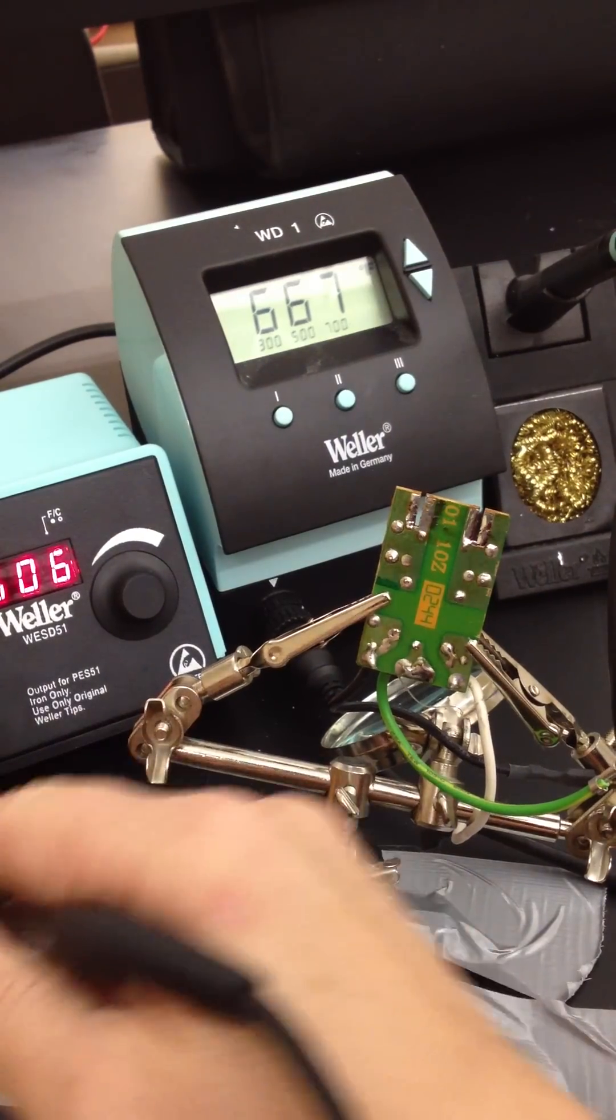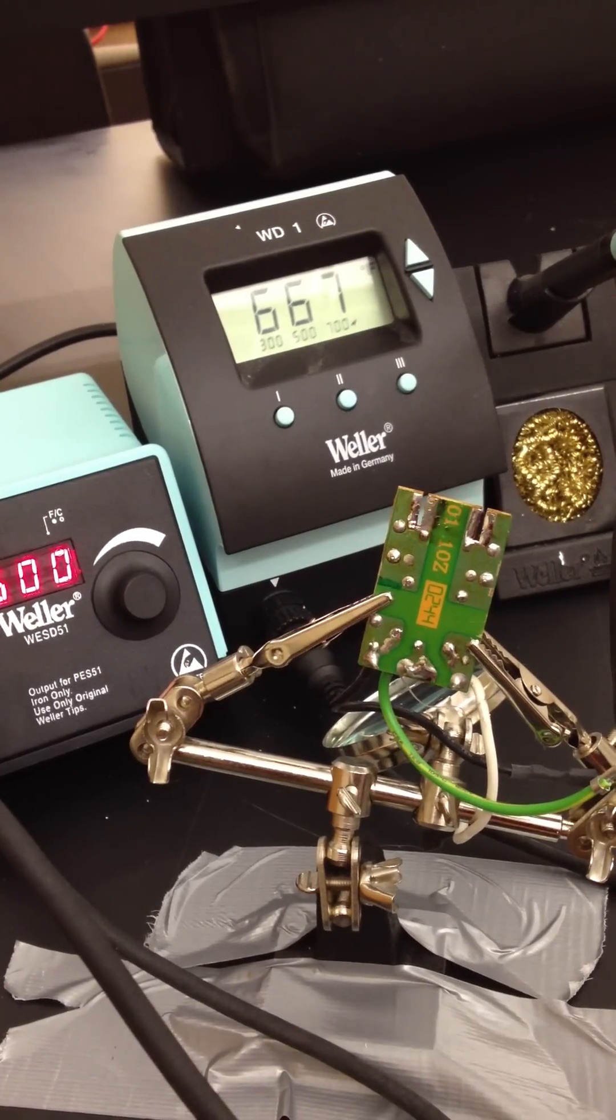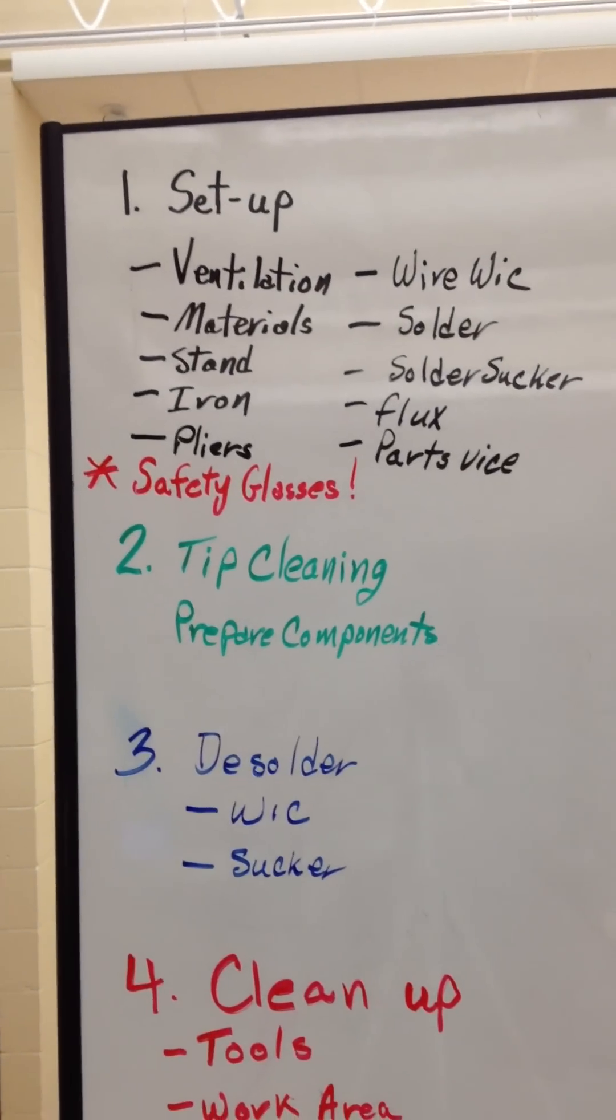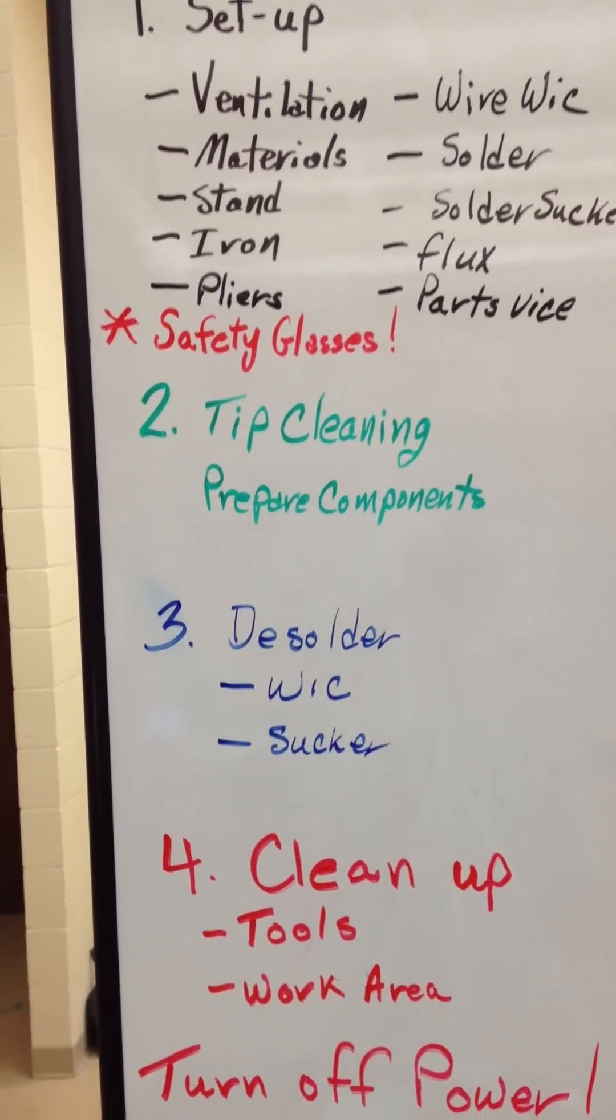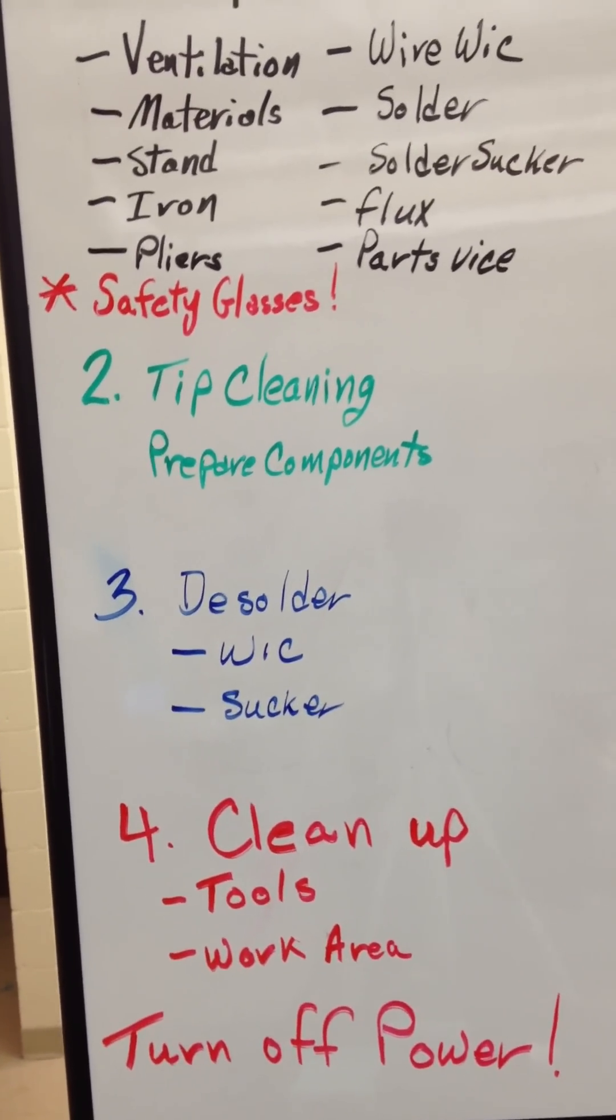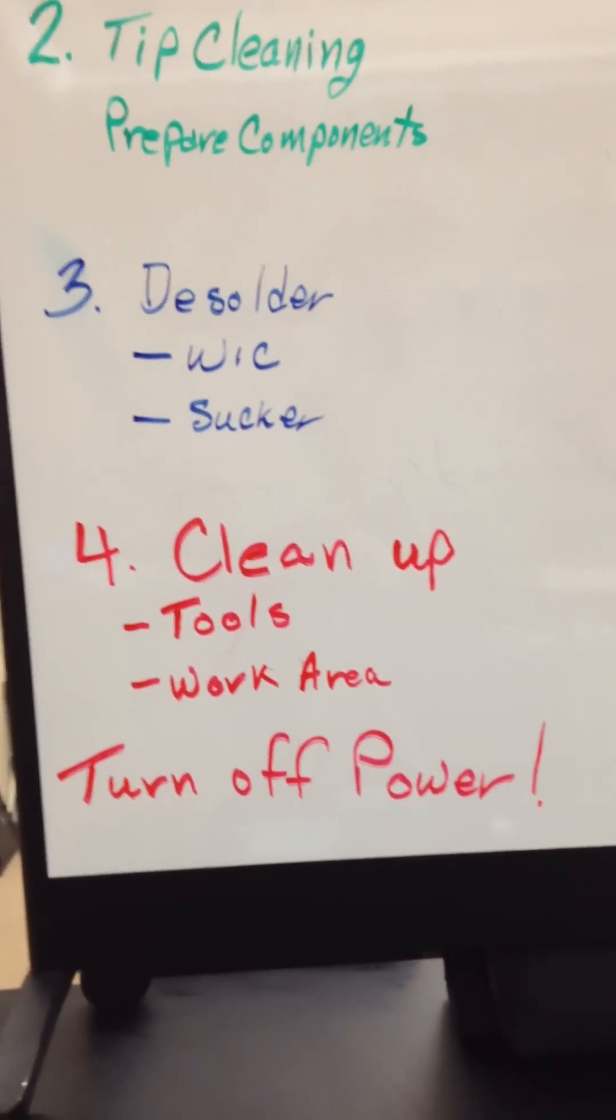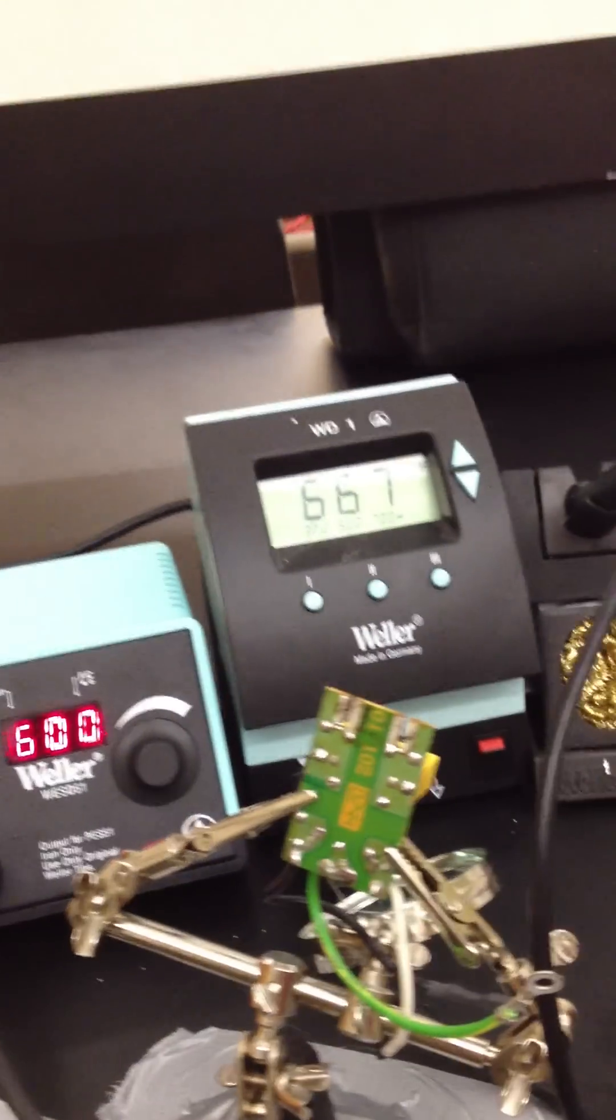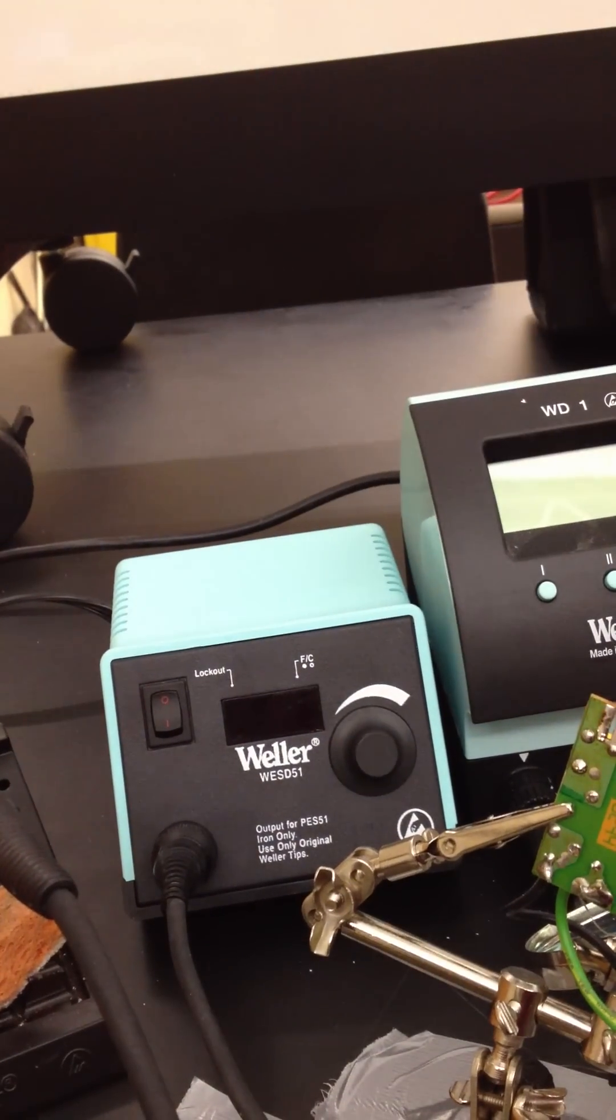There you have it. A little bit about desoldering and light soldering. Remember the steps. Safety glasses. I've had mine on the whole time. And, of course, desoldering with wick and sucker. Clean up. And we'll do that next. The most important thing. Turn off the power.